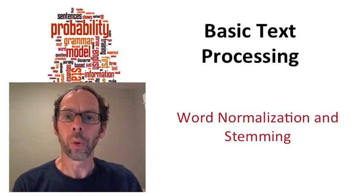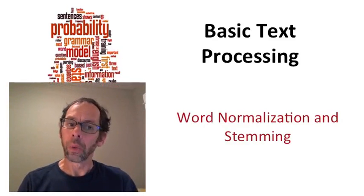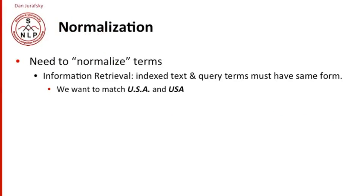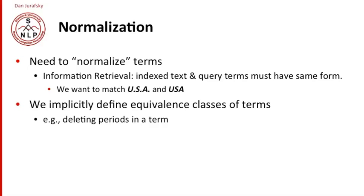Once we've segmented out words or tokenized them, we need to normalize them and stem them. Normalizing means different things. For information retrieval, we require that the index text and the query terms have to have the same form. So we want to match U.S.A. to USA if somebody asks a query with one of them and the answer has the other — we want them to match. It's like implicitly defining some kind of equivalence class of terms.